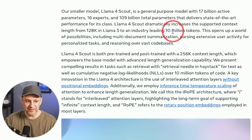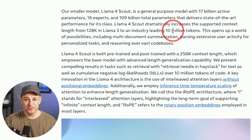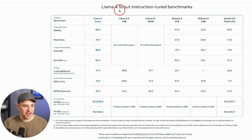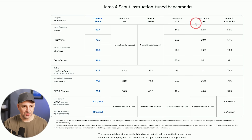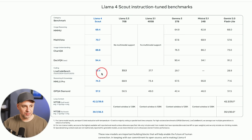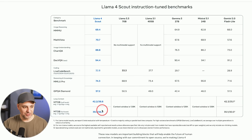Even with 10 million tokens, I don't think I have any documentation that will hit that limit, though some people have much bigger datasets to work with or analyze. The benchmark for Llama 4 Scout compares it to the older Llama 3.3 and 3.1 models — the biggest 3.1 model was 405 billion parameters — as well as other open source models and Gemini 2.0 Flash. Being multimodal, it wins in pretty much every benchmark tested, and the context window jumps from about 128K to 10 million.